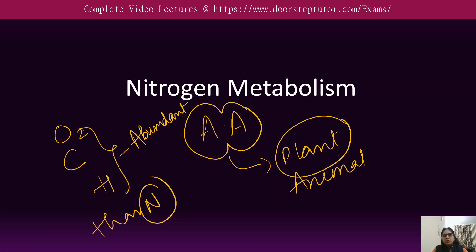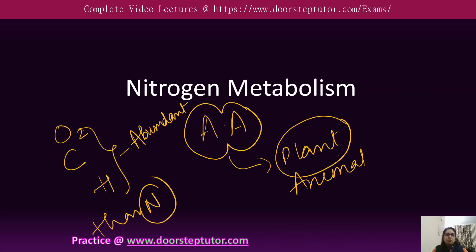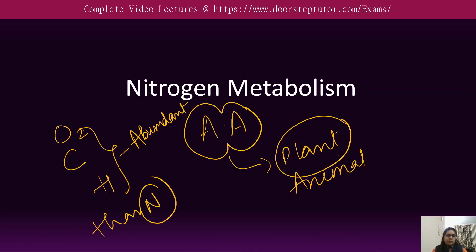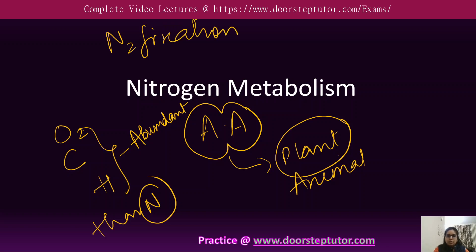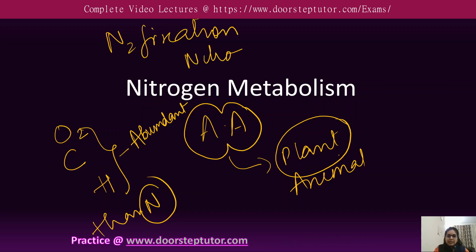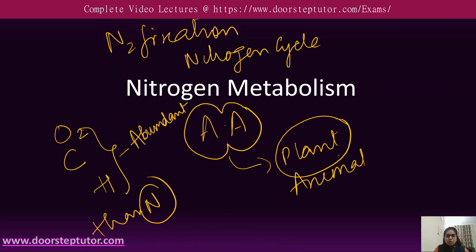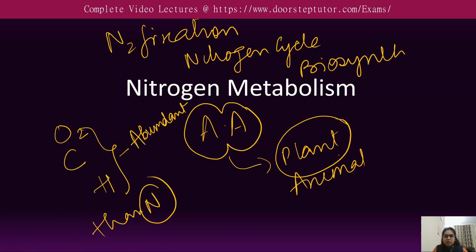The deficiency of nitrogen can lead to severe diseases in the plant, showing that nitrogen is one of the essential elements for plants. Nitrogen metabolism basically involves several processes: nitrogen fixation, the nitrogen cycle, and biosynthesis as well as the breakdown of amino acids — all of these are involved in nitrogen metabolism.